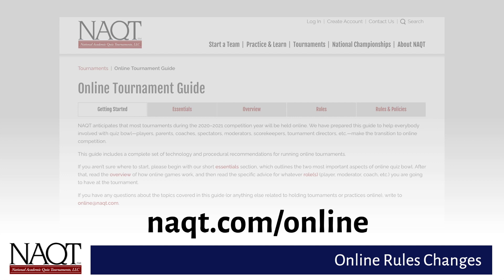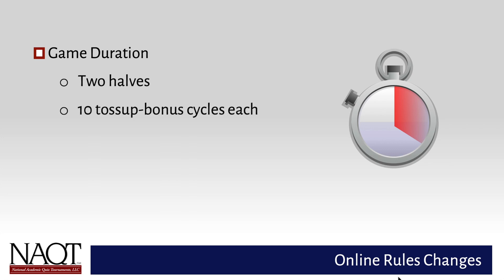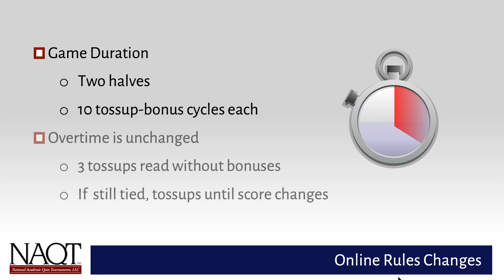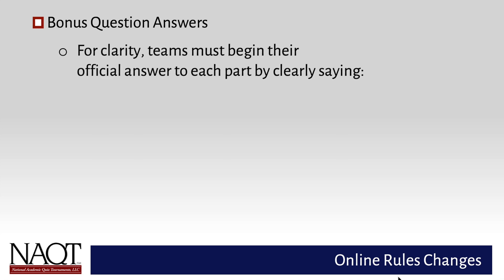Here are summaries of the modifications to the rules that NAQT has made for online play. Games in online championships will consist of two halves comprising ten toss-up bonus cycles each. Overtime rules are unchanged. Online quiz bowl makes it difficult to tell when a bonus part answer is being directed at the moderator. To alleviate this issue, NAQT's online rules require that the player answering a bonus question part for their team begin the answer by clearly stating: Our answer is.